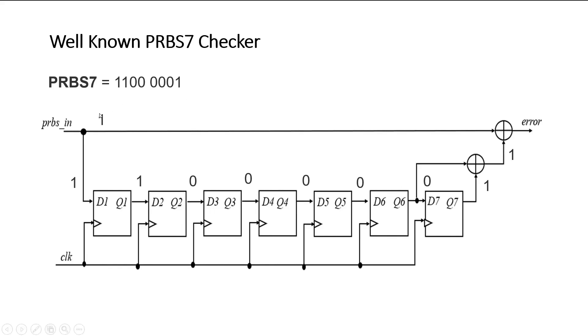So now let us assume that here some erroneous bit comes and this will differ from the expected bit. And hence, error flag will go high. Hence, whenever there will be erroneous bit in the input PRBS sequence, we will see this error flag toggling.